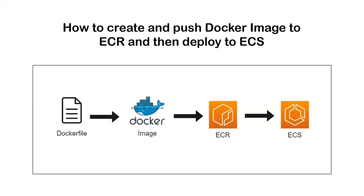Hey guys, welcome back to my channel. Today we are going to learn how to create and push a Docker image to ECR, and then deploy it to ECS. We'll be creating a Docker image with the help of a Dockerfile, storing it in ECR (Elastic Container Registry), and then deploying that stored image to ECS (Elastic Container Service). Let's get started.